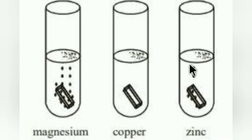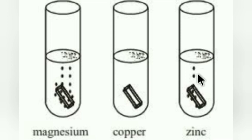In two test tubes with the same amount of dilute HCl, we add the same amount of magnesium and copper metal plates. We have seen that magnesium reacts with dilute HCl faster than other metals. The nature of the reactant affects the rate of the reaction. This is the first point.